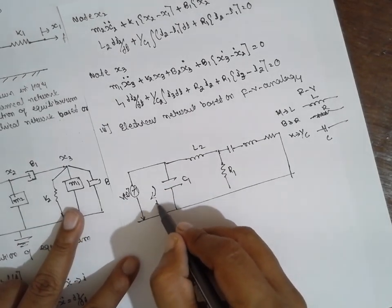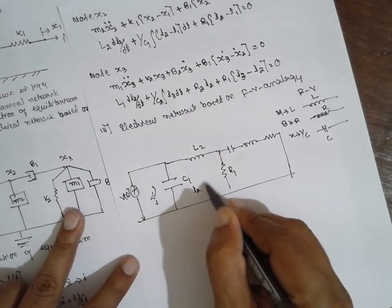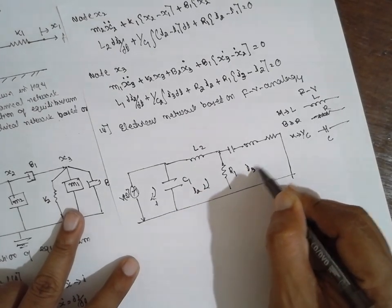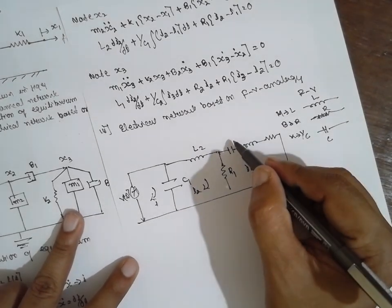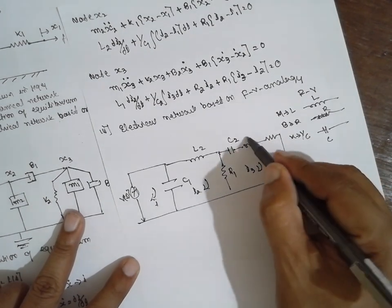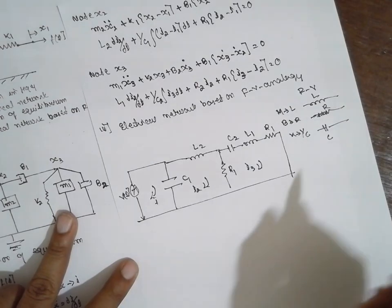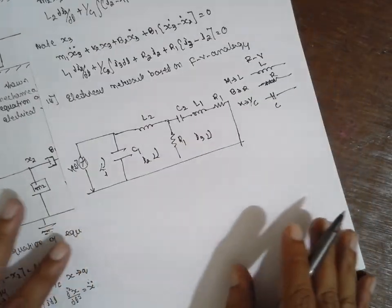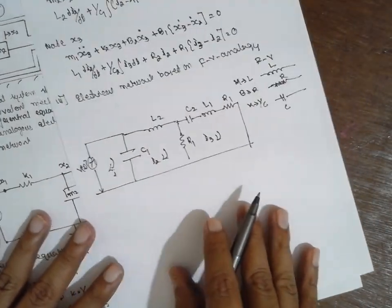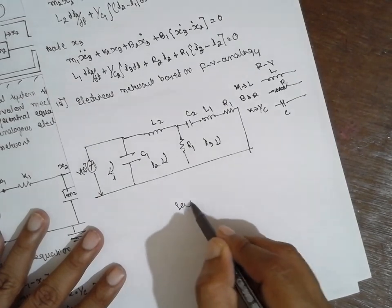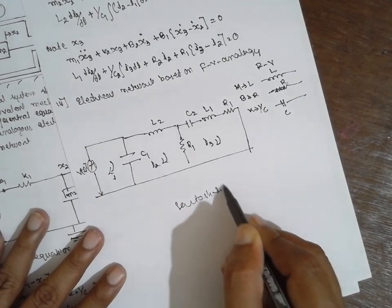Now capacitance C2, inductance L1, and R1. In this way you have to draw the electrical diagram. I am Satosh Gaidankar, thank you very much.